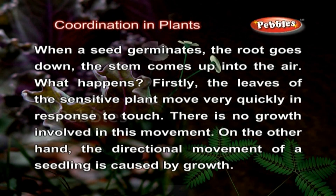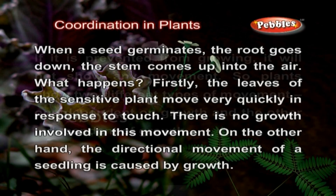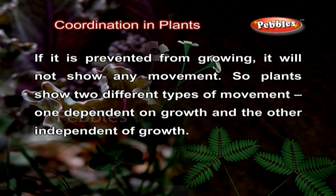The leaves of the sensitive plant move very quickly in response to touch, and there is no growth involved in this movement. On the other hand, the directional movement of a seedling is caused by growth. If it is prevented from growing, it will not show any movement. So, plants show two different types of movement: one dependent on growth and the other independent of growth.